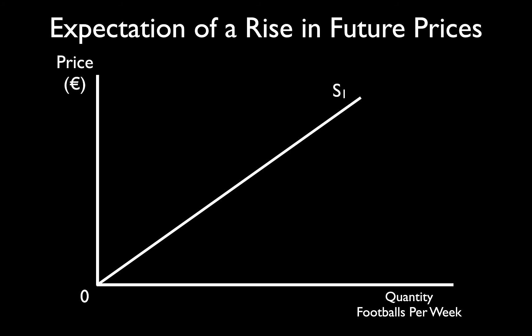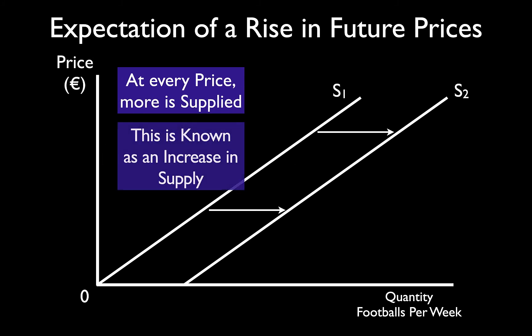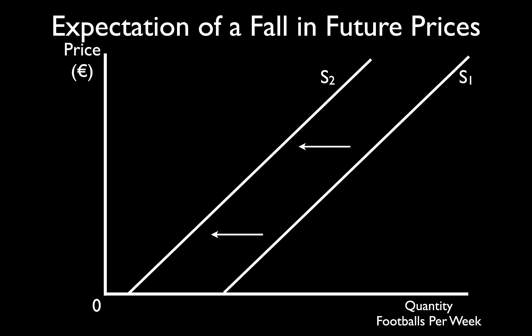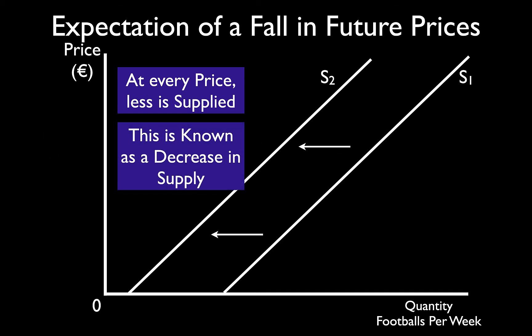If producers expect the price of the good they're producing to rise in the future — even though the price is not changing today — that will cause an outward shift in the supply curve, meaning at every price more is supplied, known as an increase in supply. If producers believe there is an expected future price fall, they will reduce the amount they are producing today at every single price, known as a decrease in supply. If they produce a few different goods, they'll reduce the supply of the good in question and potentially increase the supply of other goods. But if we're only talking about one good, following an expectation of a price fall in the future there is an inward shift in the supply curve, known as a decrease in supply.